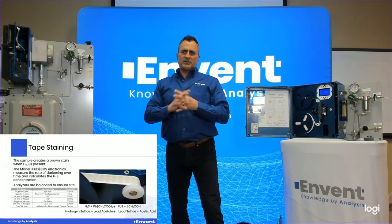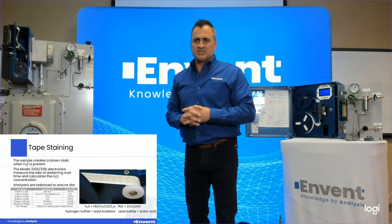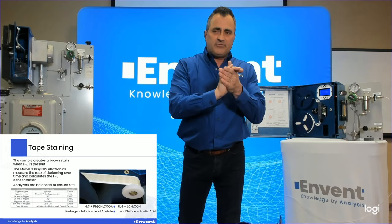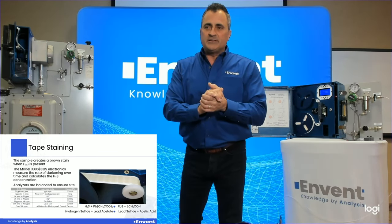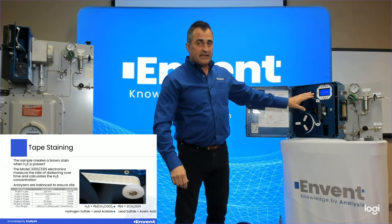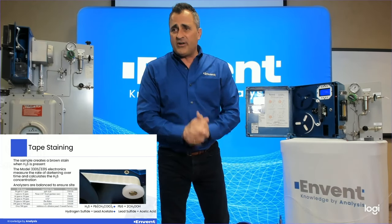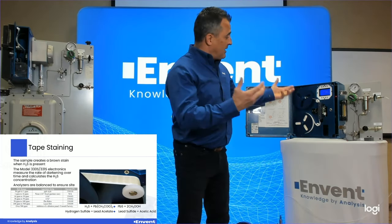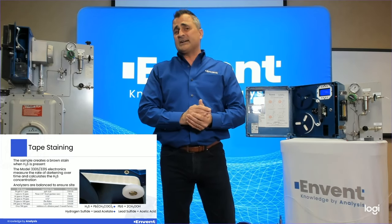Looking at the chemical composition: our hydrogen sulfide — our sample with H2S in it — plus the lead acetate tape yields lead sulfide, which is the brown stain, and acetic acid.